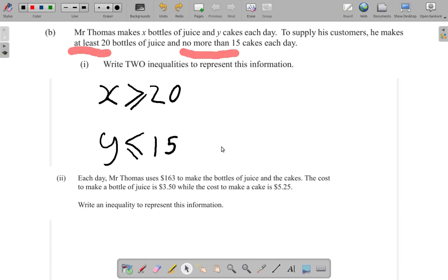Okay, we look at part two of this question. Each day Mr. Thomas uses $163 to make the bottles of juice and the cakes. The cost to make a bottle of juice is $3.50 while the cost to make a cake is $5.25. Write an inequality to represent this information.